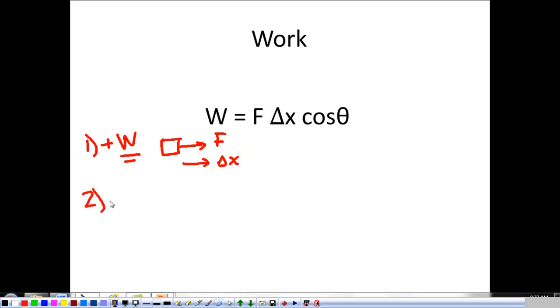The second one, negative work, is when we have an object and the force is in the opposite direction of the displacement. In that case, the angle is equal to 180 degrees. They're still parallel, but they're in exactly the opposite direction. When that's the case, the cosine of 180 is negative one, giving us negative work.